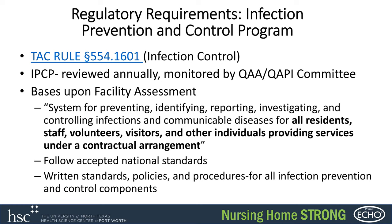When we talk about the law here in Texas as it applies to infection control, TAC rule 554.1601 requires things to be put into place. They mirror what CMS indicates. You have to have an infection prevention and control program that is reviewed annually at a minimum — and of course, anytime there's an outbreak or anything happens, it's supposed to be reviewed again.